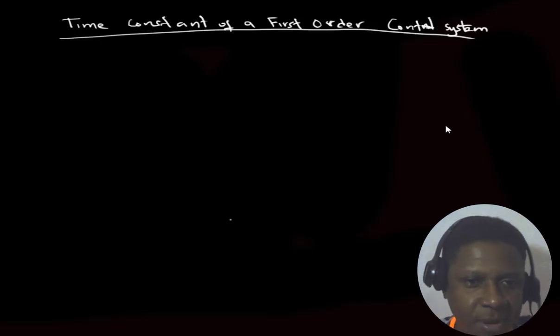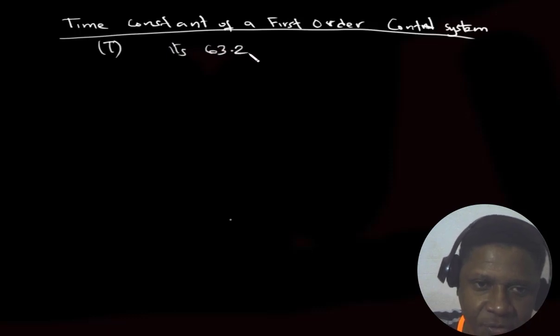Alright, so today we are going to talk about time constant of a first-order control system, tau. Tau is a time at which the system response or the output reaches its 63.2% of its final value.